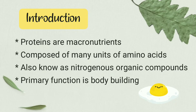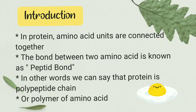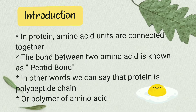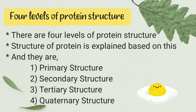Let us begin with an introduction. Proteins are macronutrients and they are composed of many units of amino acids. They are also called nitrogenous organic compounds. The primary function is bodybuilding. In protein, amino acids are connected together and the bond between two amino acids is known as a peptide bond. In other words, protein is a polypeptide chain or polymer of amino acids.